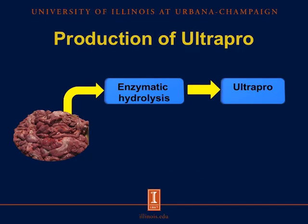In the case of ultra-pro, this is a non-commercial experimental ingredient. Basically, this is prepared by enzymatic hydrolysis of pig intestines that were obtained at the slaughter facility.